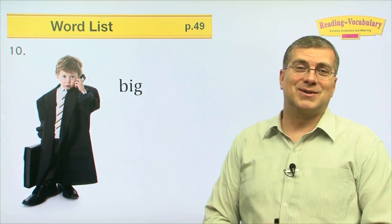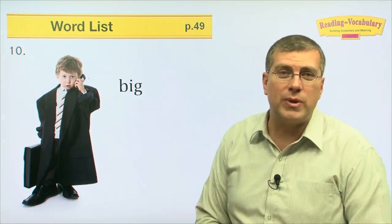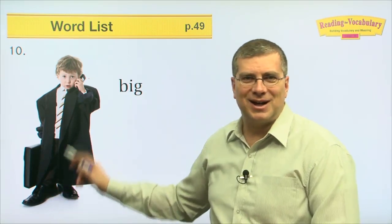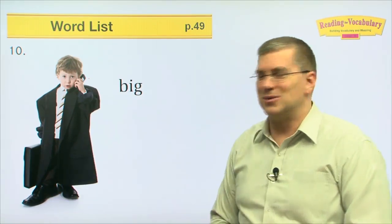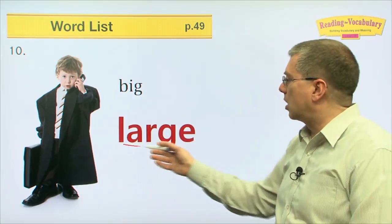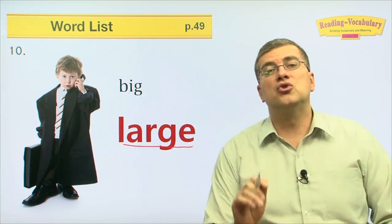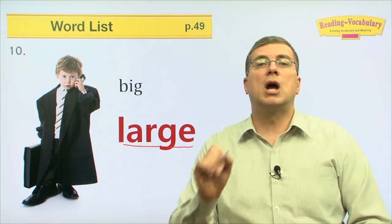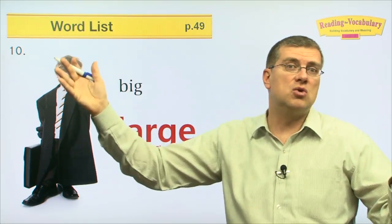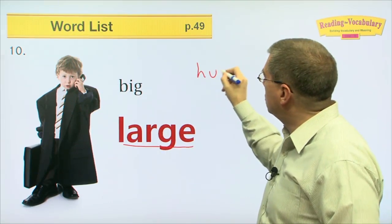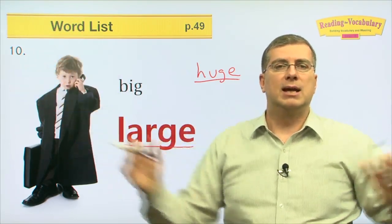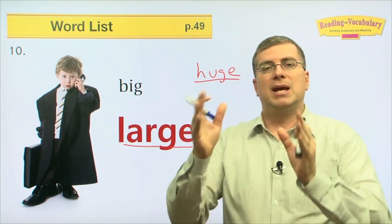Number ten — looks like Junior is wearing Daddy's clothing. He's got clothes that are too big for him. Another word for big is large. The boy's clothes are too large for him, too big for him. Large is something that's very big. Or you could say huge — huge has more emphasis. Really, really big, not just big but huge. Big and large and huge.